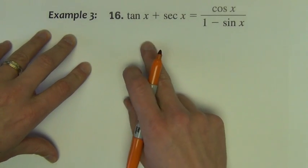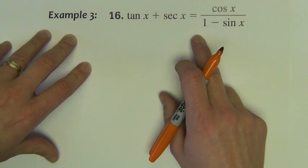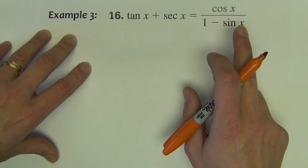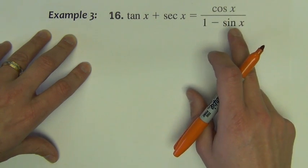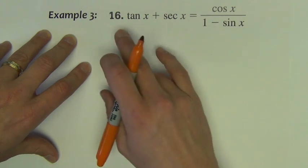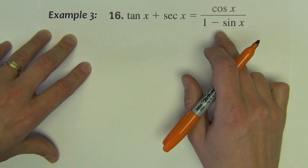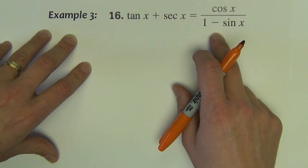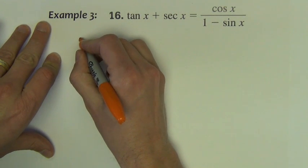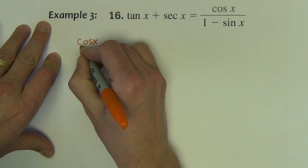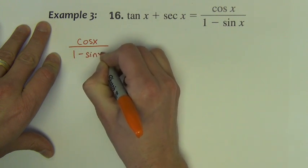In this third example, we're asked to verify that tangent x plus secant x is equal to cosine divided by 1 minus sine. In this example, I'm going to start with the right hand side. A little unusual to go with this side, but I'm going to start with this side and make it turn into the left hand side of the equation, as there's a specific technique involved with an expression that looks like this that I want to show. So let me rewrite that side: cosine x divided by 1 minus sine x.